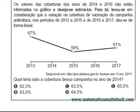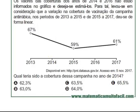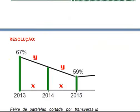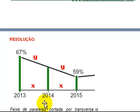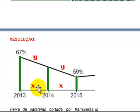Eu vou pegar esse gráfico e transformar isso numa figura geométrica. Olha o meu gráfico aqui: ele fala que aqui é 67%, aqui é 59%, e temos os anos 2013, 2014 e 2015. É importante frisar que de 2013 a 2014 é o espaço de um ano, e de 2014 a 2015 também é o espaço de um ano. Então, se aqui for X, aqui também será X.